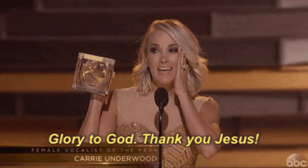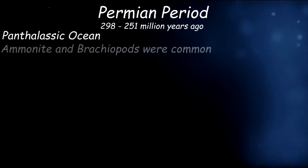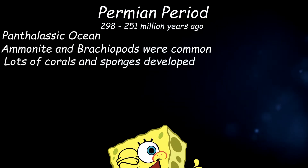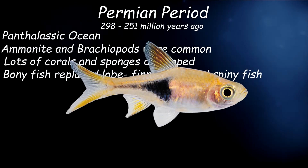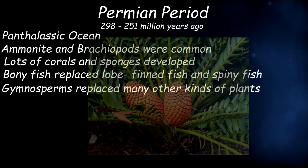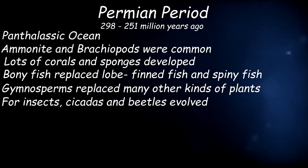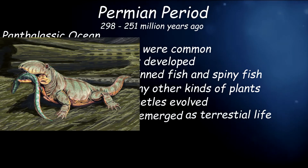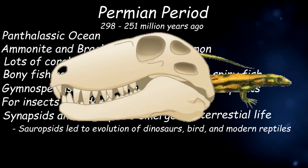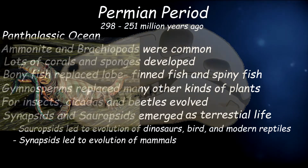Finally, the Permian Period. Earth was mostly covered by the Panthalassic Ocean. In the ocean, Ammonites and Brachiopods were common, and the fossil records showed lots of coral and sponge species that had developed. Bony fish soon replaced lobe-finned fish and spiny fish. As for plants, gymnosperms with tree seeds replaced other kinds of plants, and as for insects, cicadas and beetles evolved. For land animals, two new groups of terrestrial life emerged: the synapsids and the sauropsids. Sauropsids had two skull openings and led to the evolution of dinosaurs, birds, and even modern reptiles.